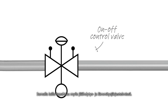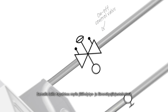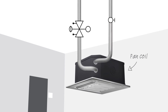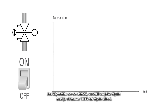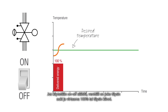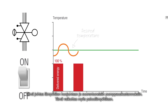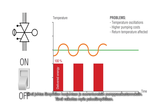Similarly in heating and cooling systems, if you use on-off control, the valve is either fully open and delivers 100% flow, or fully shut. This leads to temperature oscillations and higher pumping costs, and the return temperature is also affected.